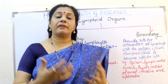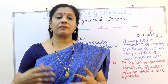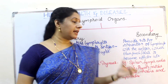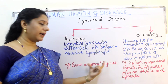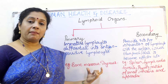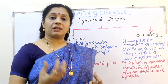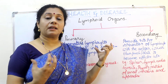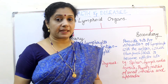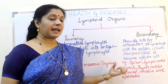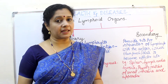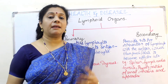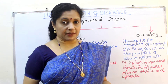Bone marrow will produce immature lymphocytes that differentiate into B lymphocytes, while from the thymus they become T lymphocytes. T for thymus, B for bone marrow — that is why the names B lymphocytes and T lymphocytes. Both bone marrow and thymus together provide the microenvironment for the maturation of lymphocyte cells.